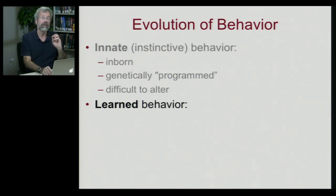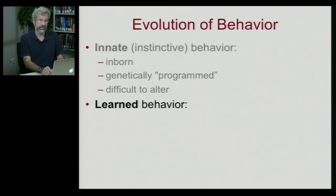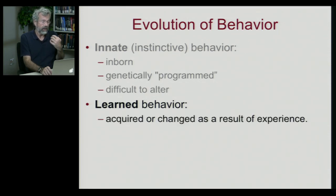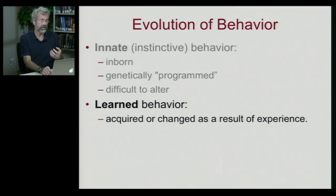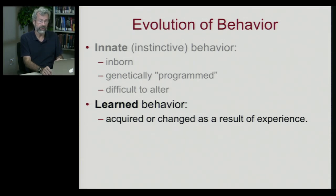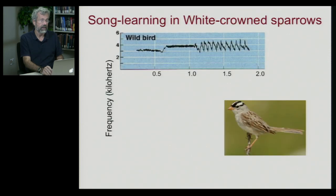In more complex organisms — animals with much bigger brains and longer lifespans — behavior is often learned. With learned behavior, we mean that an individual behaves differently according to its experience; behavior is acquired or changed as a result of some sort of experience.